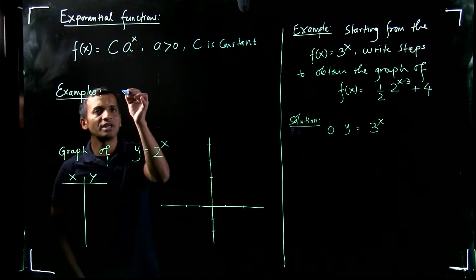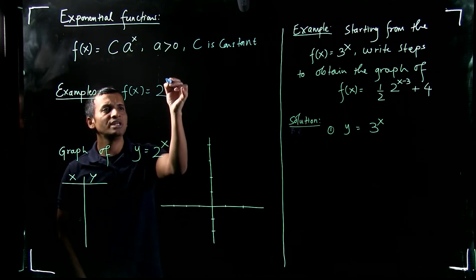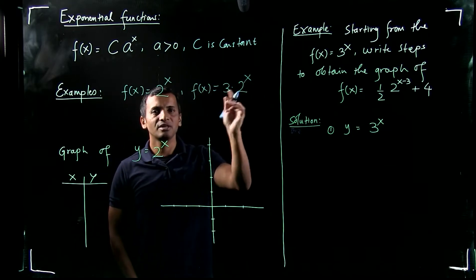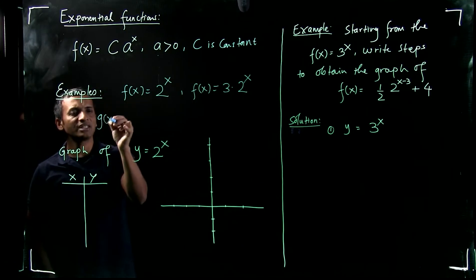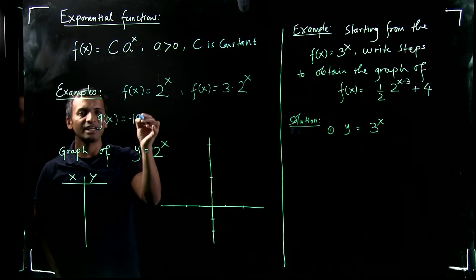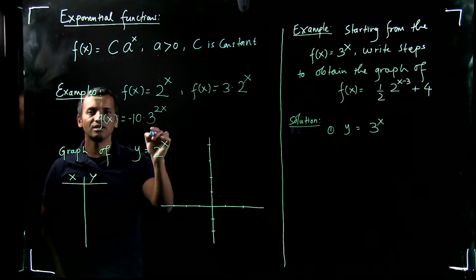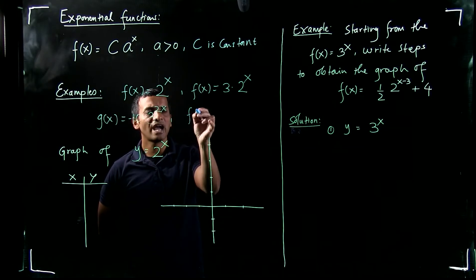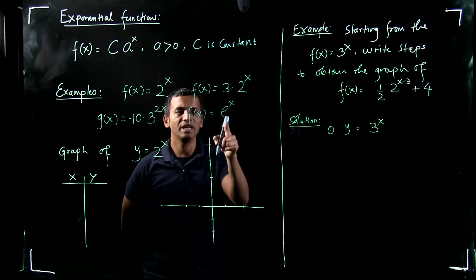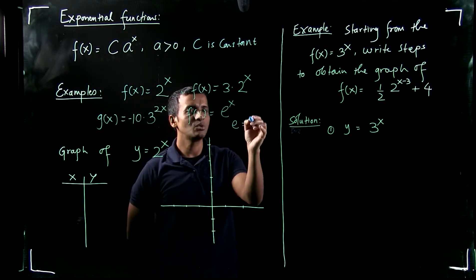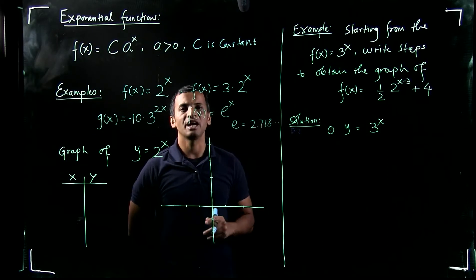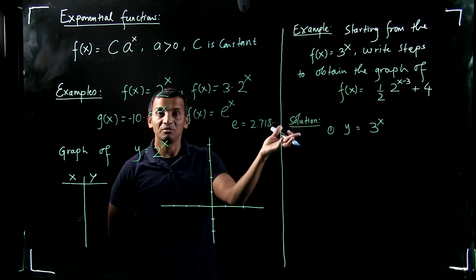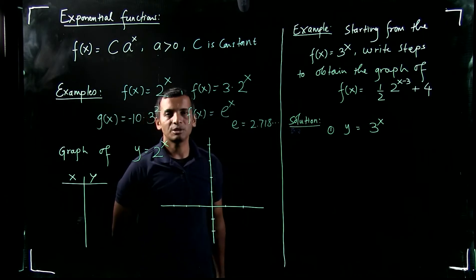For example, f of x equals 2 to the x, or f of x equals 3 times 2 to the x — these are exponential functions. Or g of x equals negative 10 times 3 to the 2x — also an exponential function. One more example: f of x equals e to the x. Here, e is an irrational number approximately equal to 2.718. Since e is positive and x is in the exponent, this is also an exponential function.